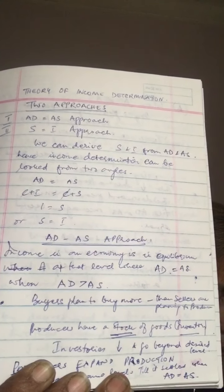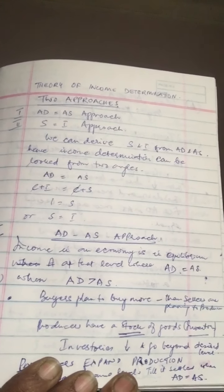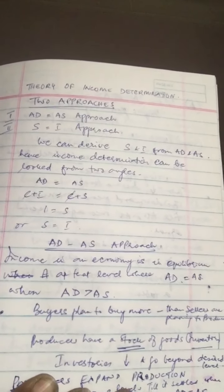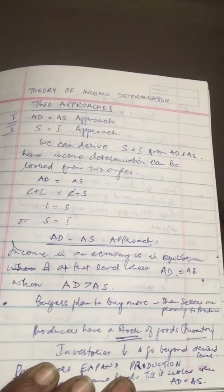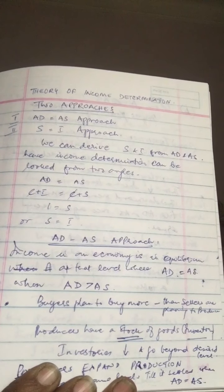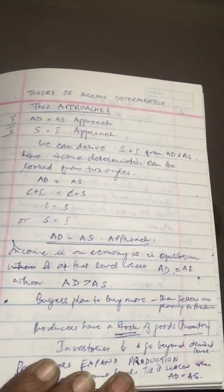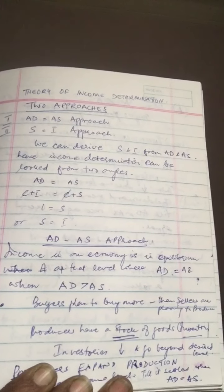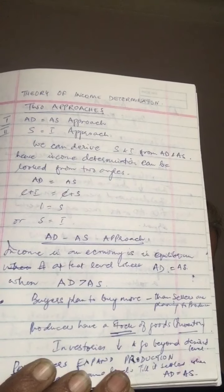There are two approaches to the theory of income determination. The equilibrium level of national income is determined at the point where AD equals AS, that is aggregate demand equals aggregate supply. Since we have assumed that there is neither foreign trade nor government, AD is now reduced to the sum of private consumption expenditure C and investment. So AD is equal to C plus I. Now since aggregate supply is the same as national income,